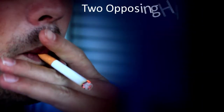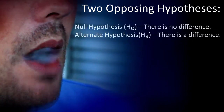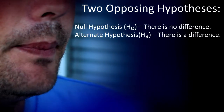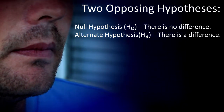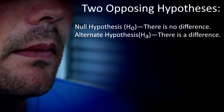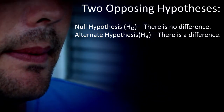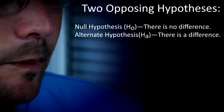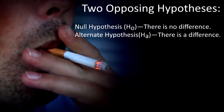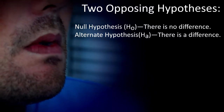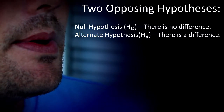First, there are two opposing hypotheses for this question. The null hypothesis, commonly shown as H subscript 0, is that there's no difference in smoking quantity between people with and without depression. The alternate hypothesis, shown as H subscript A, or sometimes H subscript 1, is that there is a difference in smoking quantity between people with and without depression.